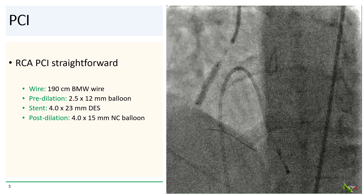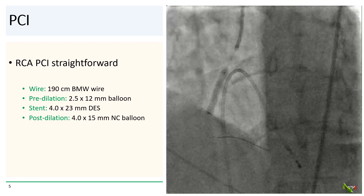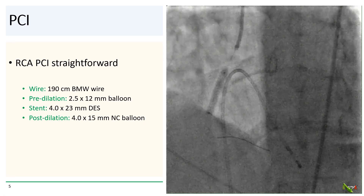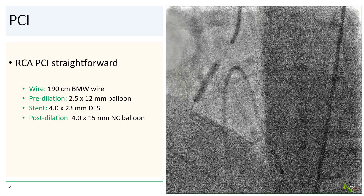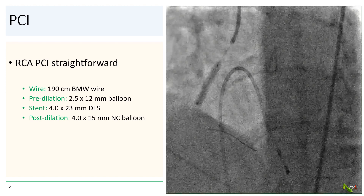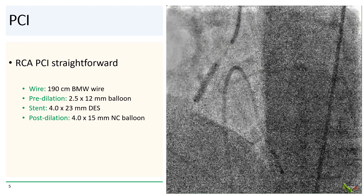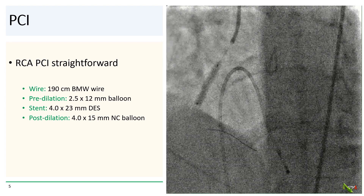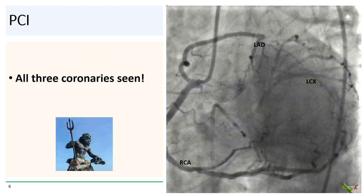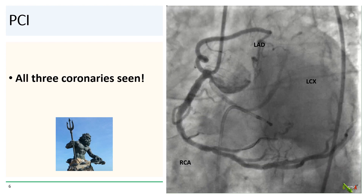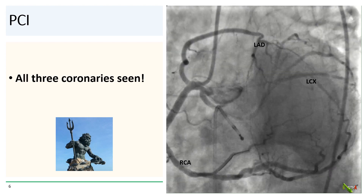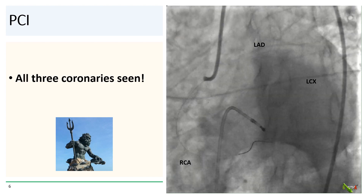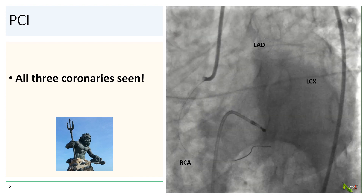But given that it's a STEMI, we couldn't dawdle around, so we went ahead and fixed the right. PCI was very straightforward. We wired the lesion with the standard BMW workhorse wire, pre-dilated with a 2.5-millimeter balloon, stented with a 4.0-by-23-millimeter DES, and post-dilated with a 4.0-millimeter NC balloon. We did a post-stent injection, and to our surprise, all three coronary arteries opacified. The angiogram looked a little bit like Triton's trident.